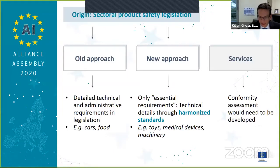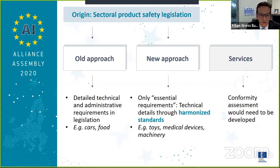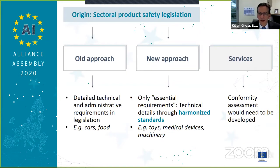I will quickly give a short introduction into the topic, and then I will leave the room for the speakers for a little tour de table, a little introduction into the topic. Then we will have time for Slido questions, so you can post your questions in Slido. The address is AI Alliance hashtag, and then you go under the button for conformity assessment and standards.